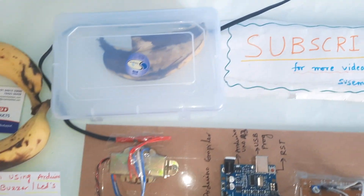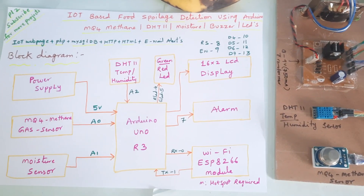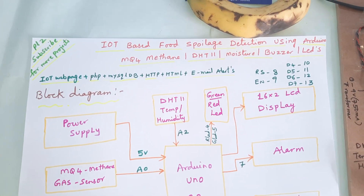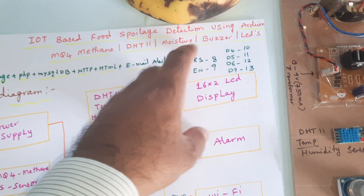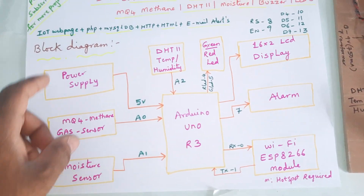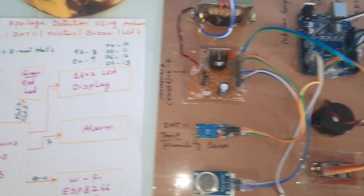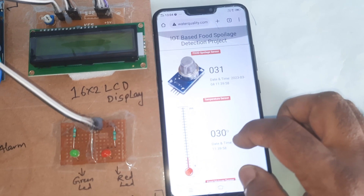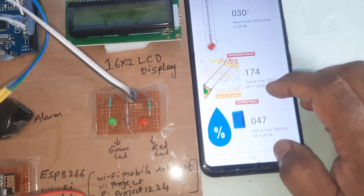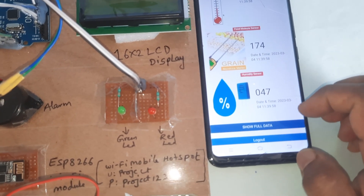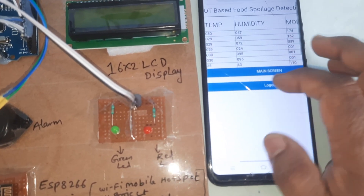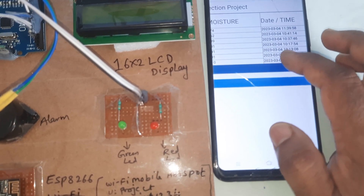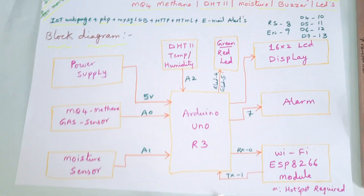We are from SVS Embedded. The project title is IoT-based food spoilage detection using Arduino, MQ4 methane sensor, DHT11 temperature and humidity sensor, moisture sensor, one buzzer, a red LED, and a green LED. We are using an IoT webpage to monitor methane gas, temperature, moisture, and humidity parameters. Let us move on to the block diagram.